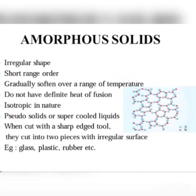So amorphous solids are known as supercooled liquids or pseudo solids. When cut with a sharp edged tool, amorphous solids cut into two pieces with an irregular surface because they have no regular pattern of arrangement. Examples of amorphous solids are glass, plastic, rubber, and other polymers.